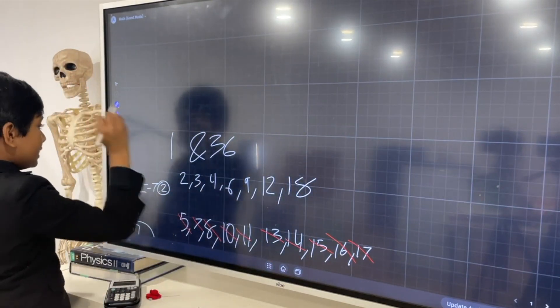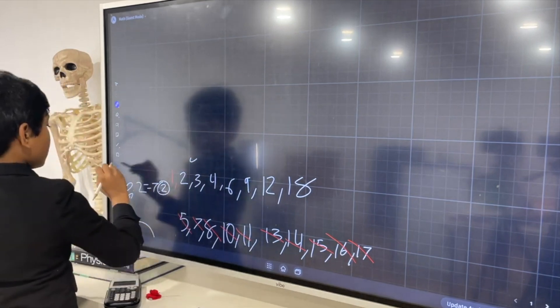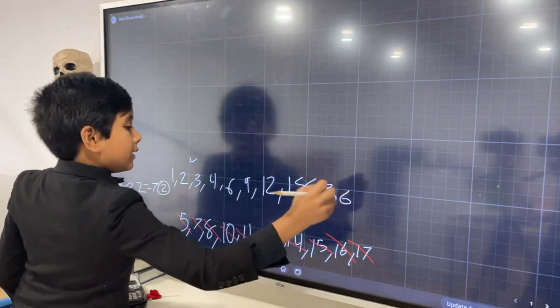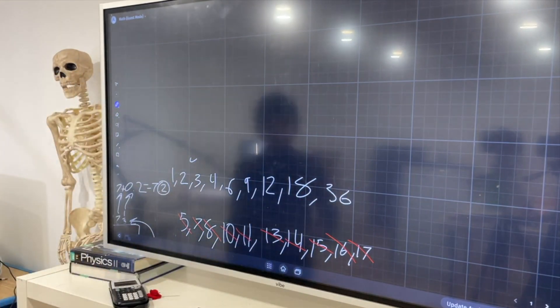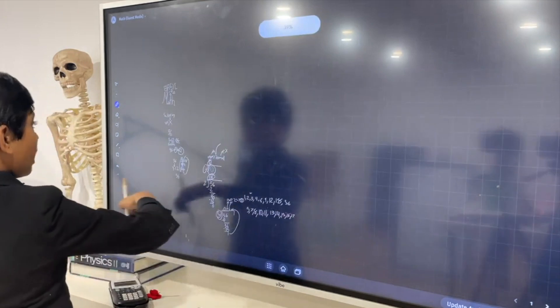So, these are the factors that we have left. Here are our factors: 1, 2, 3, 4, 6, 9, 12, 18, 36. So, now, why is this useful?